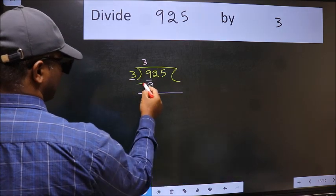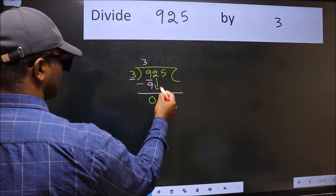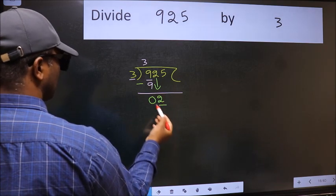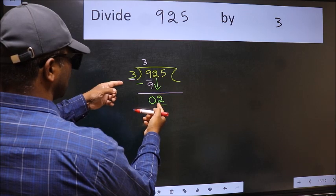Now we should subtract. We get 0. After this, bring down the beside number. So 2 down. Now here we have 2 and here 3. 2 is smaller than 3.